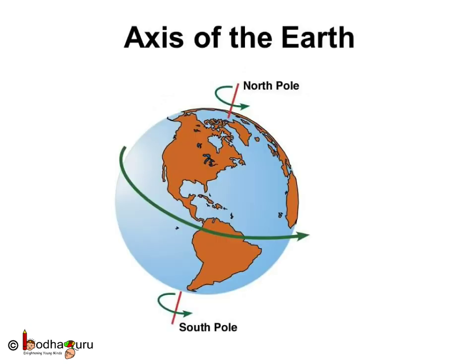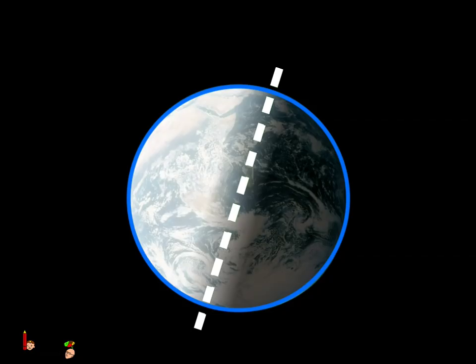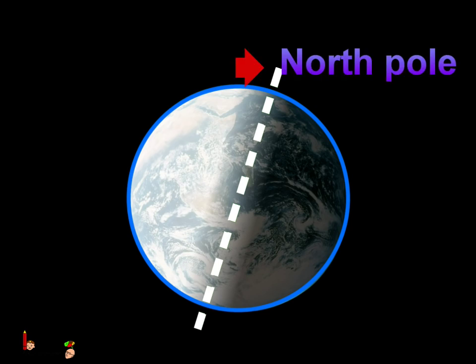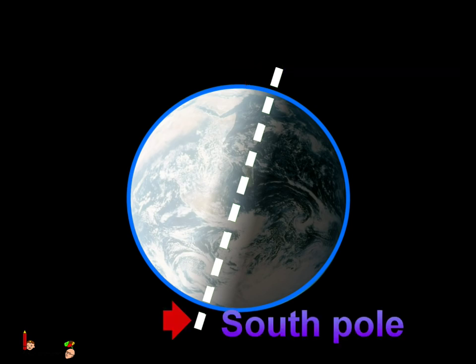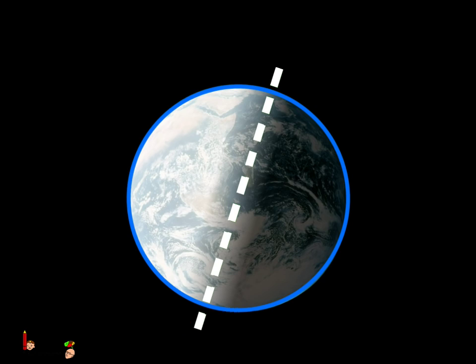the Earth rotates around an imaginary straight line that runs through the center of the Earth from the north part of the Earth to the south part of the Earth. This imaginary line is called the axis.